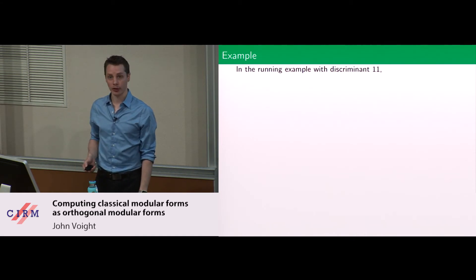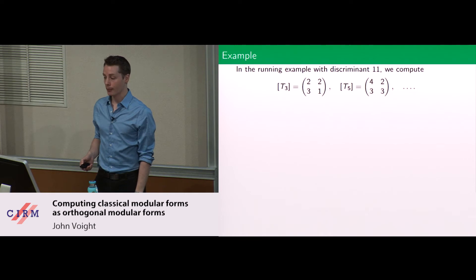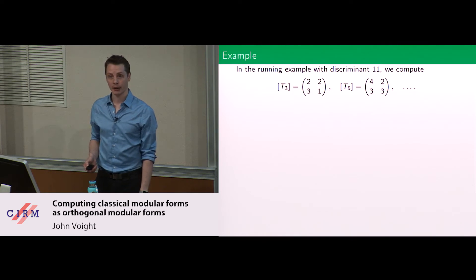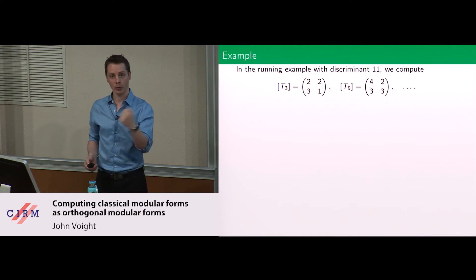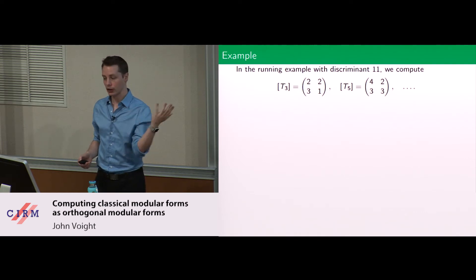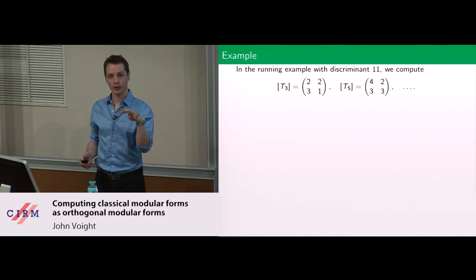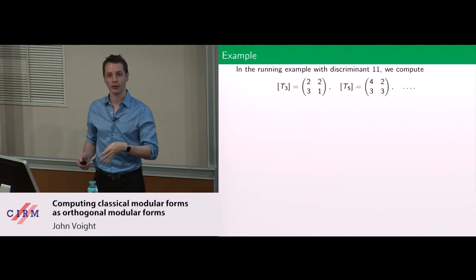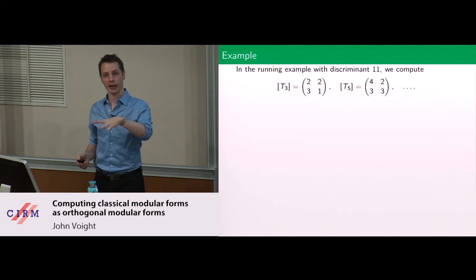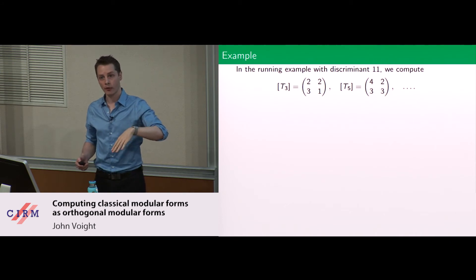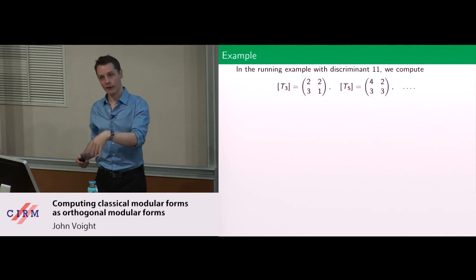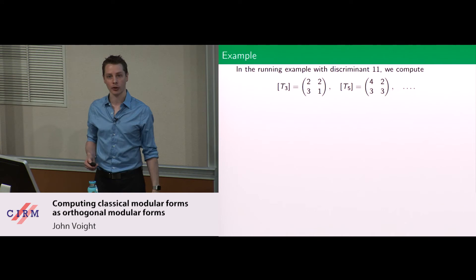So you guys remember discriminant 11 — there are two forms. Here's what the Hecke operators look like. I have two classes. For the first class, for T_3 for example, I have four neighbors. I say: among the four neighbors, which are you isometric to? Apparently two of them were isometric to the first guy and two to the second guy. Then I repeat the algorithm for lambda prime, and they sorted themselves according to 3 and 1. That's the representation.